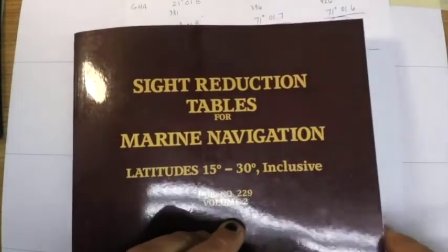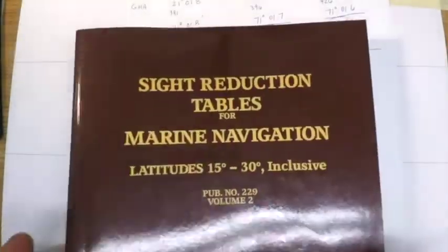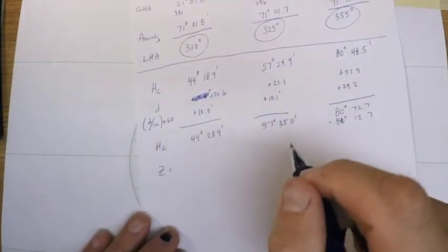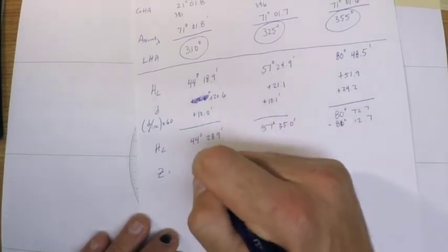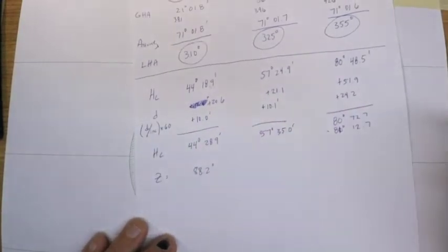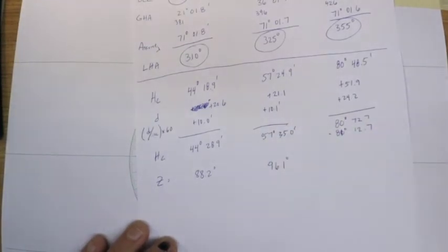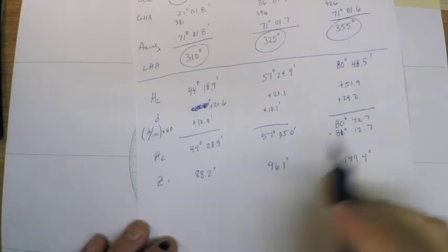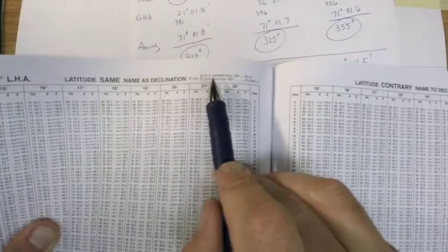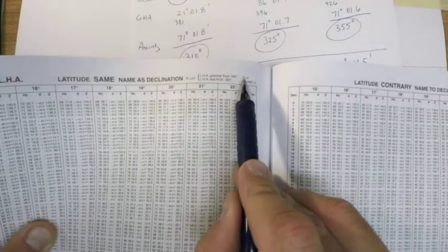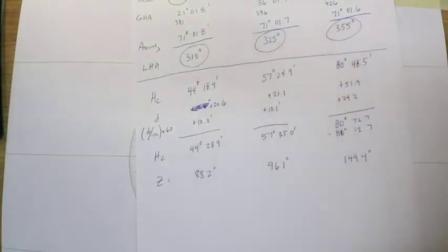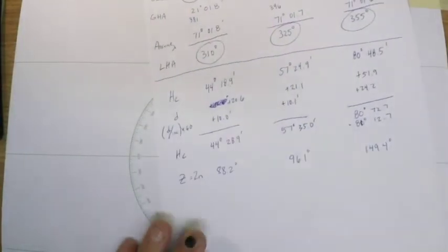The other piece of information that I pulled out of HO 229 was the Z number. So the Z or the azimuth was equal to 88.2 degrees for this one, it was 96.1 degrees for this one, and 149.4 degrees for this one. Just checking the azimuth rules here: if my LHA in the northern latitudes is greater than 180, my final azimuth angle is equal to Z, so I don't need to make any corrections to that. Z equals ZN and that portion is done.